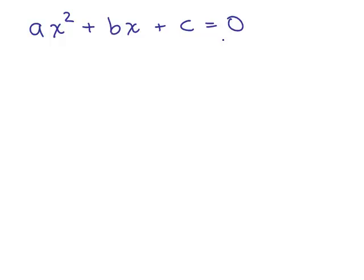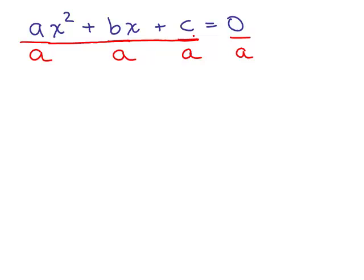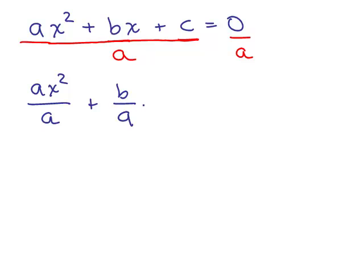We start by dividing both sides by the coefficient of x squared, which is a — so divide everything by a. Each term goes over a. We get ax squared over a plus bx over a, which I'll write as b over a times x, plus c over a equals 0. And since a can't be 0, we don't have to worry about dividing by zero.